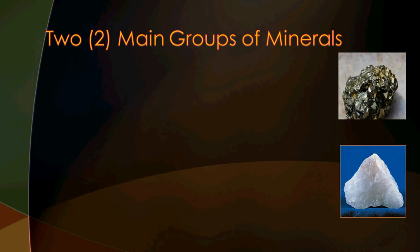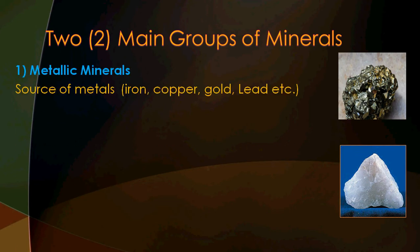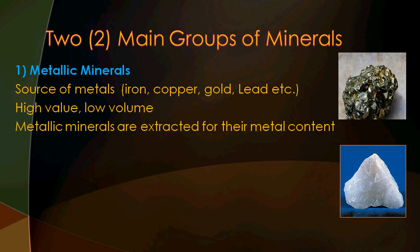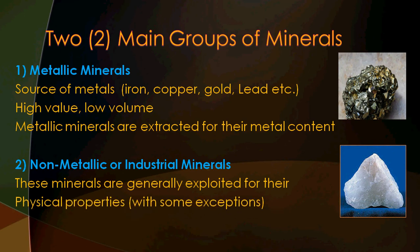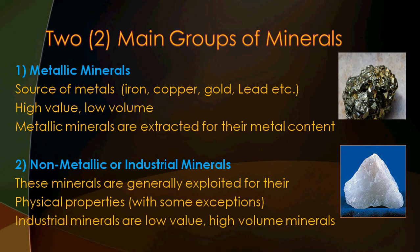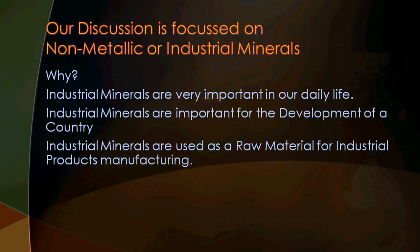There are two main groups of minerals. Number one: metallic minerals, which are the source of metals like iron, copper, gold, lead, zinc, etc. They are high-value, low-volume minerals extracted for their metal content. The second group, which we will focus on in most of the lectures, is non-metallic or industrial minerals. These minerals are generally exploited for their physical properties and are low-value, high-volume.